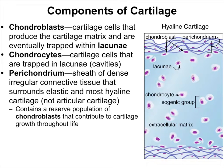Chondroblasts secrete the extracellular matrix — both fibers and ground substance — around them. As the cartilage gets built around them, they get trapped inside, like getting painted into a corner. Cells don't move well through the thick cartilage, so they end up trapped in little rooms called lacunae, meaning 'a space.' Once trapped in lacunae, they stop being chondroblasts and become chondrocytes — cartilage cells — which no longer make new cartilage but maintain the existing cartilage.